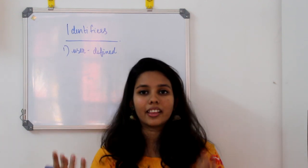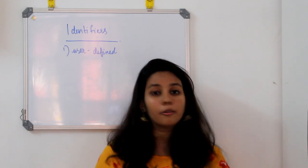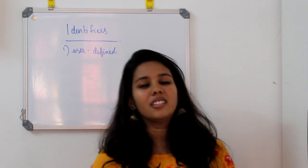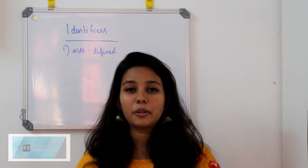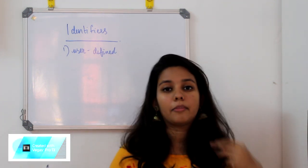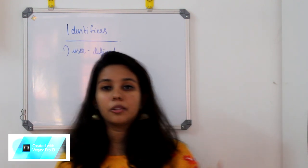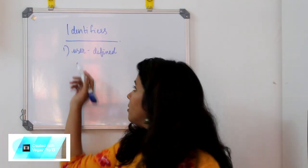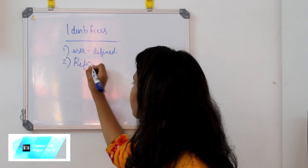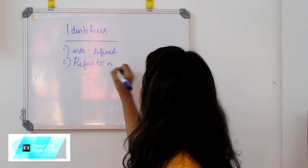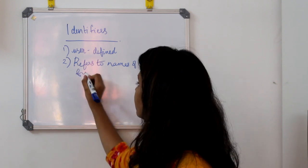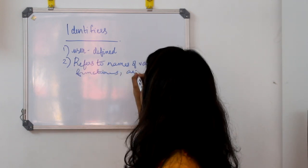Identifiers are also user-defined. If you have the name of a variable, that doesn't have fixed meaning — it's not fixed meaning. If we use A or B, we can use them. That's what user-defined means. It refers to the names of variables, functions, arrays, etc.